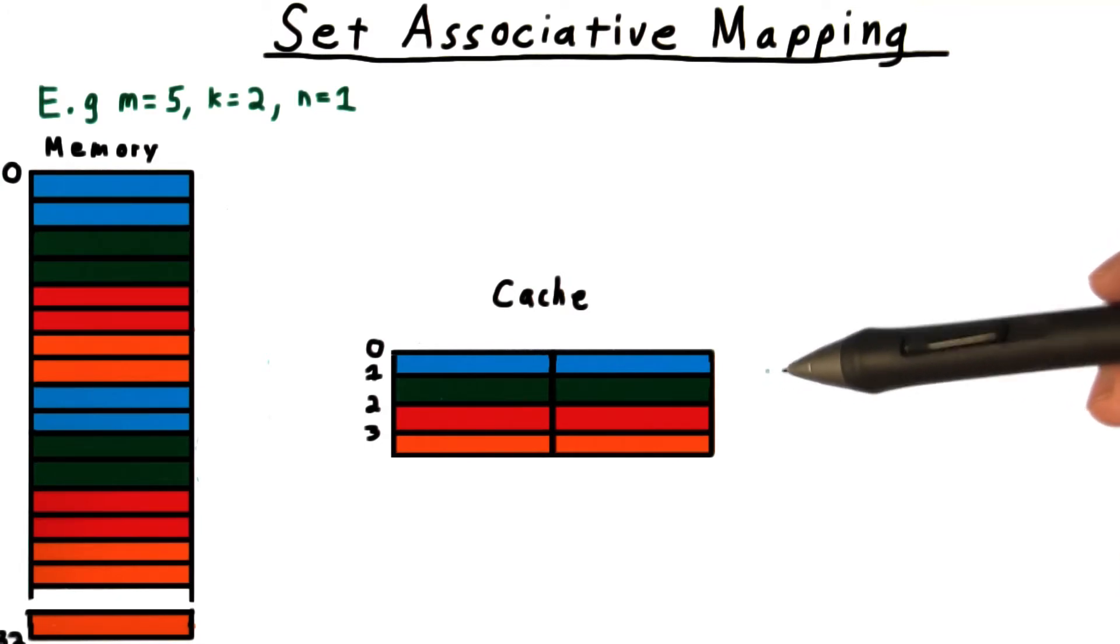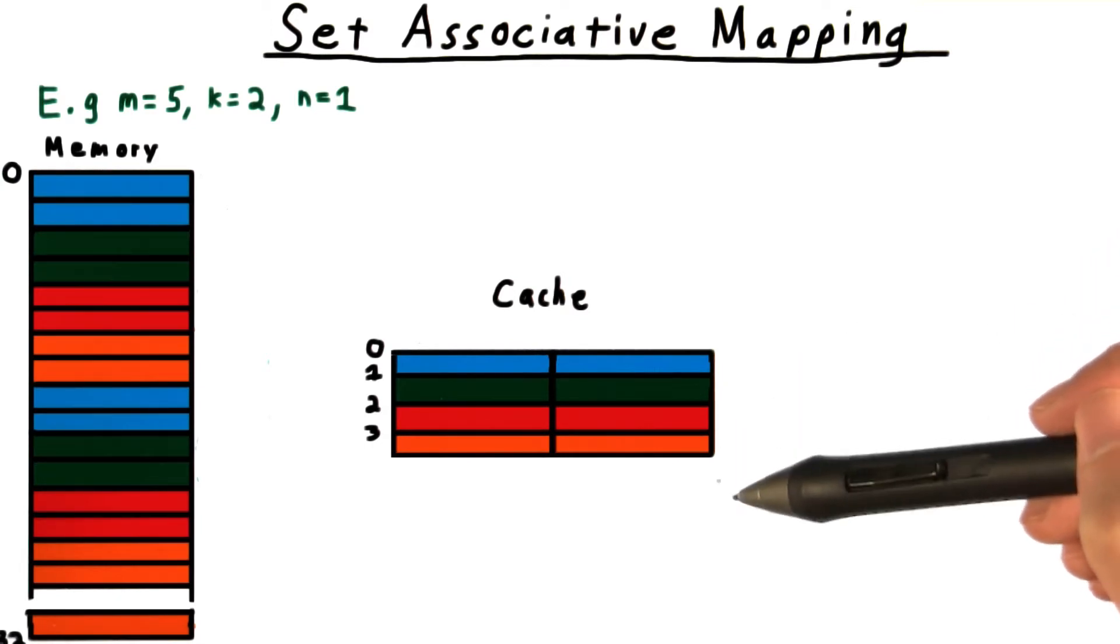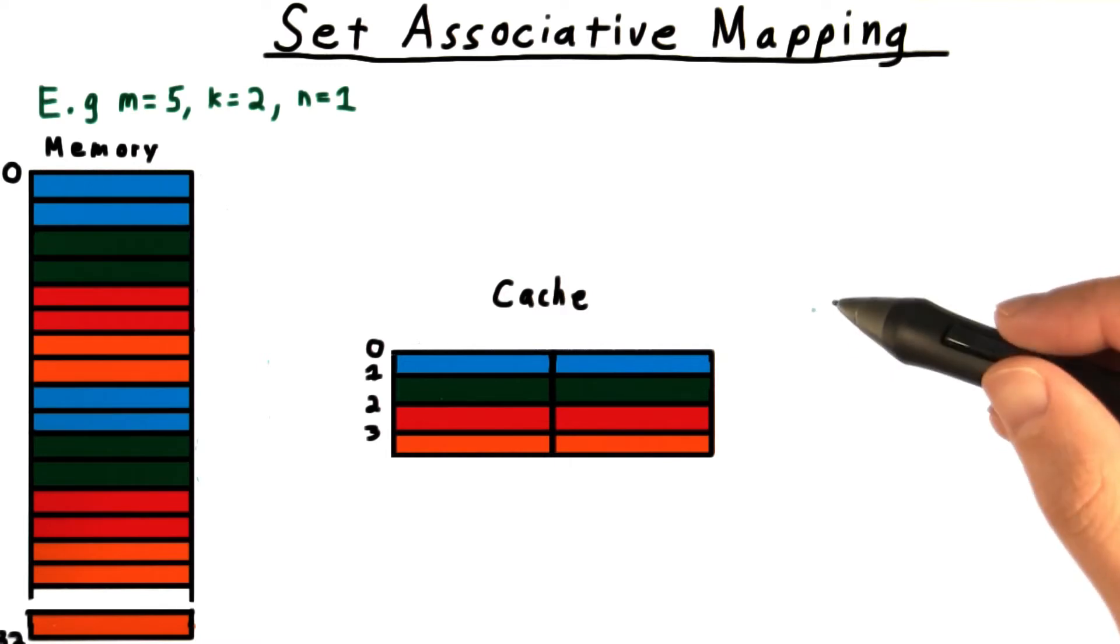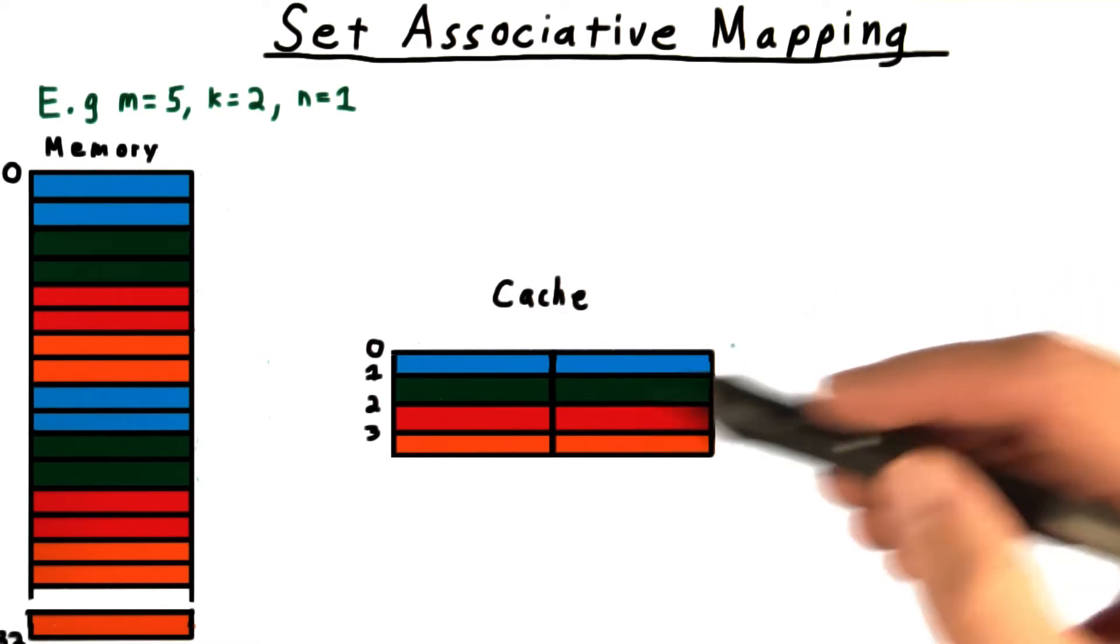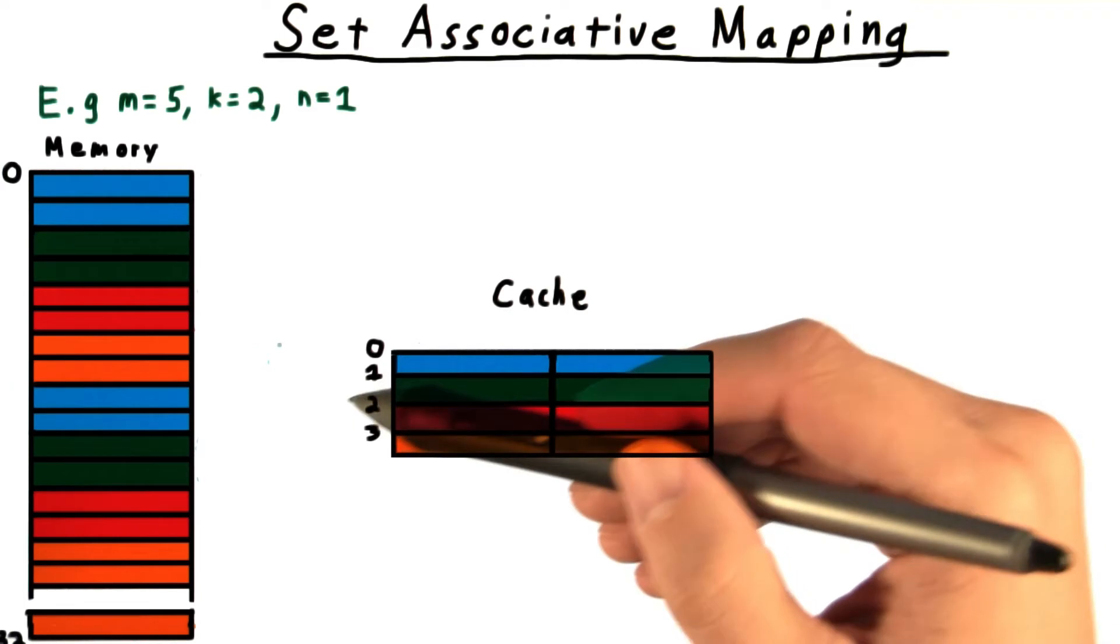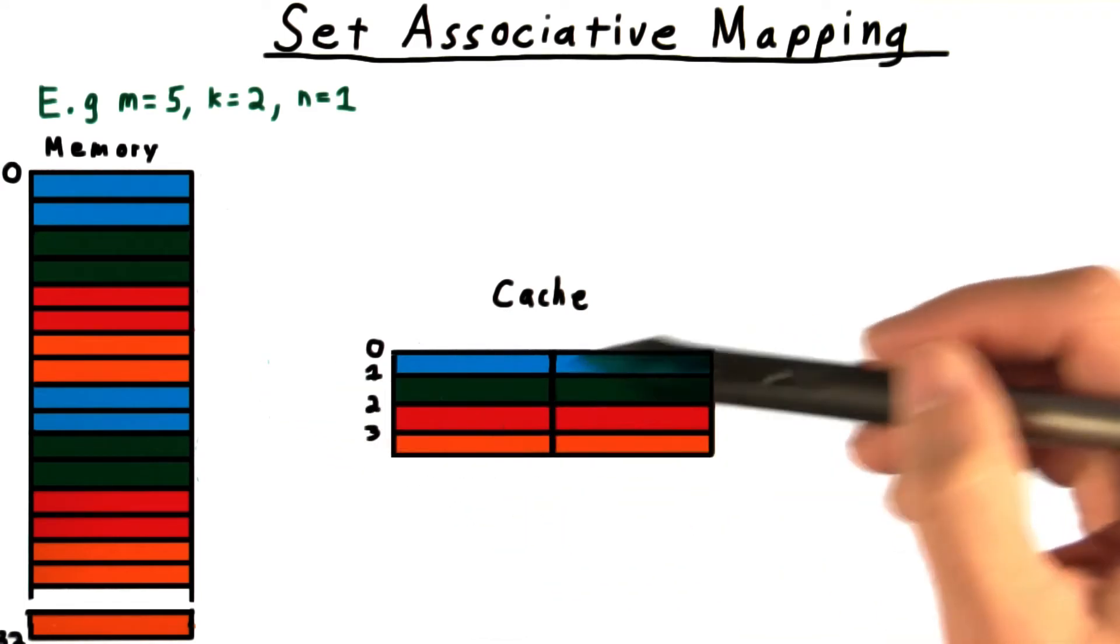This, of course, is rather silly, given that there are all these other entries in the cache that aren't getting used at all. The fundamental problem is that the address, any one of these here, is only associated with one location in the cache.